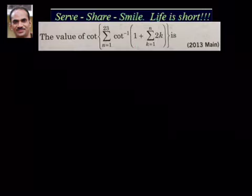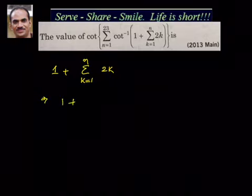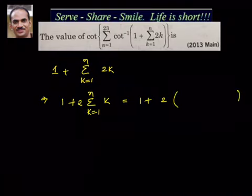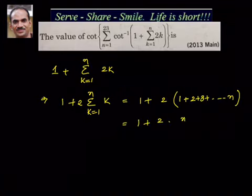Let's start with how to take care of the inner part. What we have is 1 plus sigma k equal to 1 to n of 2k. This equals 1 plus 2 times sigma k equal to 1 to n of k. Putting k equal to 1, 2, and so on up to n, that's the sum of n natural numbers. We know that sum equals n(n+1)/2, so the value becomes 1 plus n(n+1).